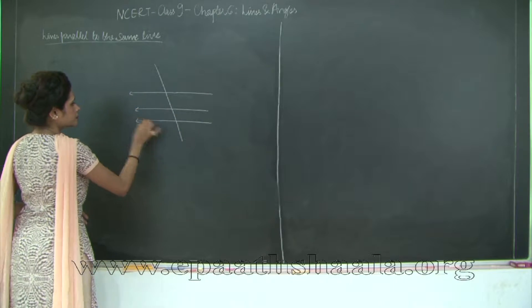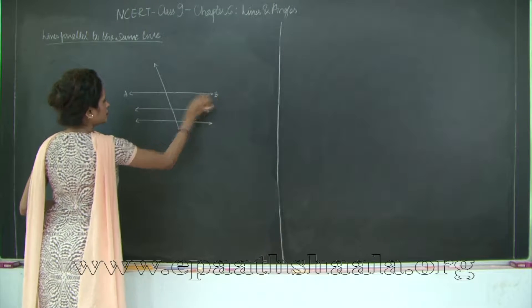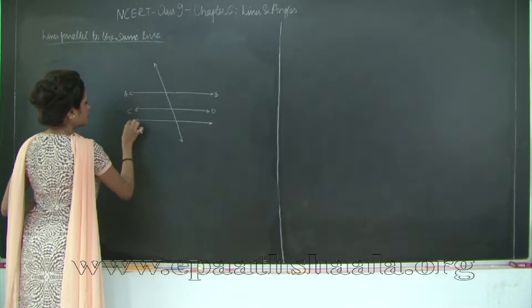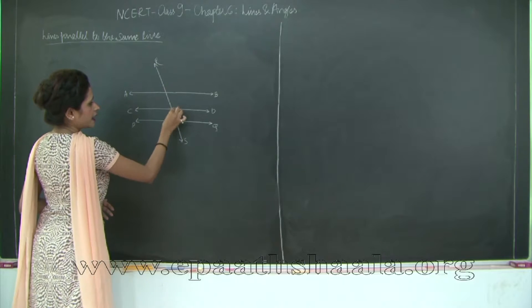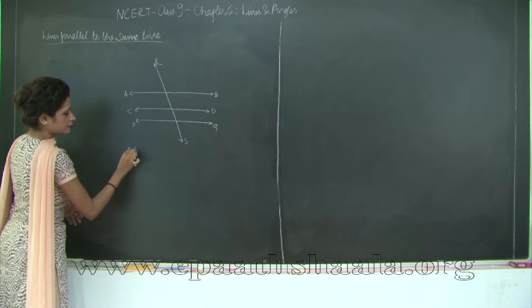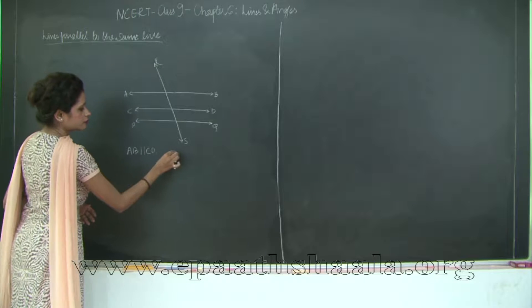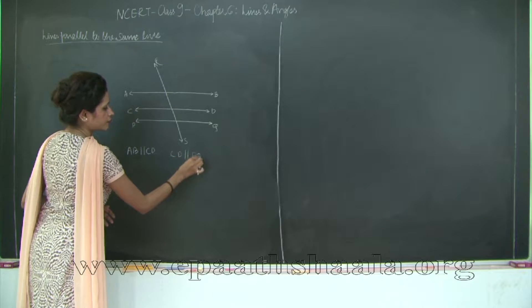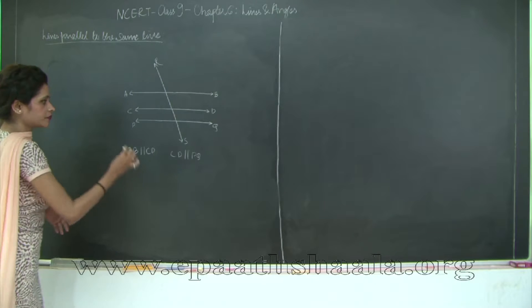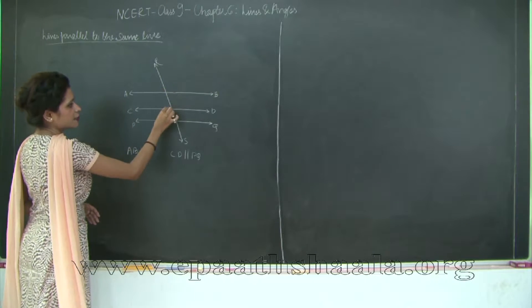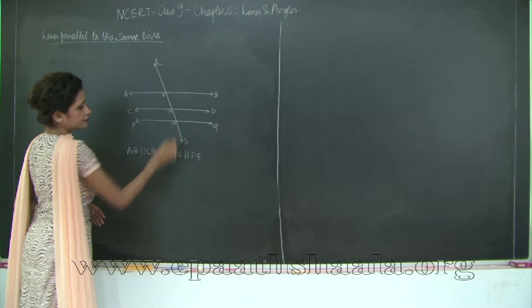I will name my lines AB, CD, PQ and this transversal as RS. Now AB is parallel to CD and CD is parallel to PQ. So we need to check what is the relationship between these three lines taken together. First of all, since AB is parallel to CD, I will mark the point of intersection as O, M and N.